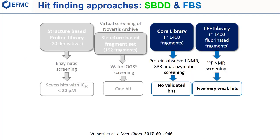In addition to the target-based focus set of fragments, we also screened two preparatory fragment libraries. The core library — a fragment library for different screening methods — was screened by protein-observed NMR, SPR, and enzymatic assay, and this screening did not deliver any validated hits. We also screened our in-house library called LEF, which stands for Local Environment of Fluorine, a library composed of fluorinated fragments containing CF3, CF2, and CF motifs, specifically designed for fluorine NMR screening. We screened it at low concentration in mixtures of 30 compounds each by using the ligand-observed fluorine NMR direct method, obtaining five very weak hits.